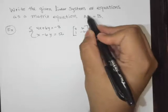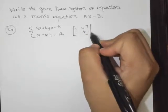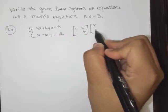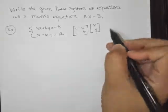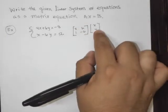The next thing you do, this matrix x is what I call the variable matrix. So this is the coefficient matrix, this is the variable matrix.